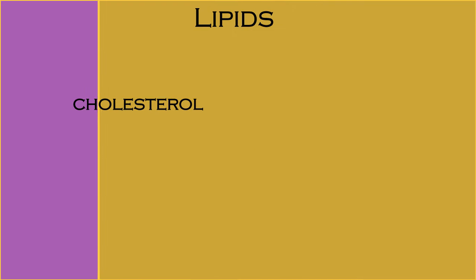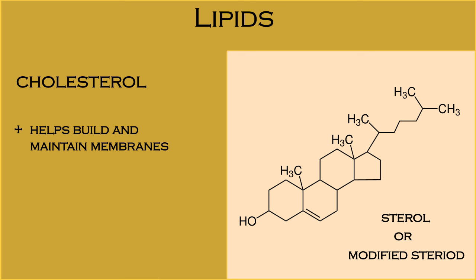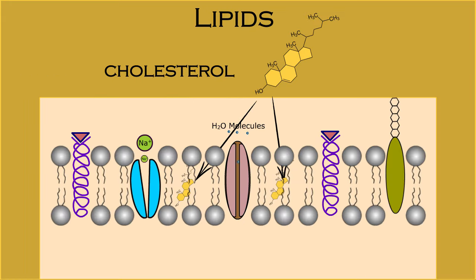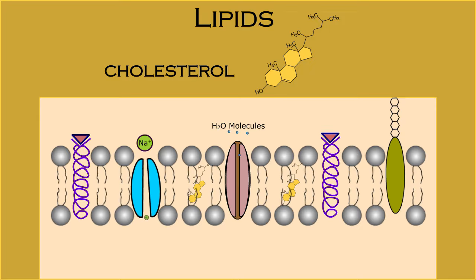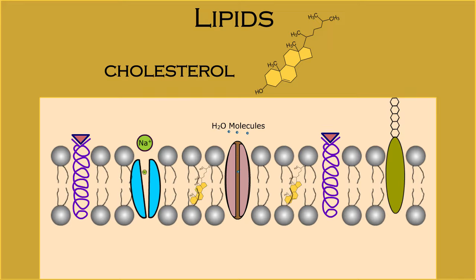Cholesterol is an organic molecule known as a sterol, or modified steroid. It helps build and maintain membranes and composes over 30% of all animal cell membranes. The cholesterol molecule has four interconnected carbon rings. Cholesterol helps to stabilize all animal cell membranes. The body uses it to synthesize steroid hormones, including sex hormones and those of the adrenal cortex. It's also used during vitamin D biosynthesis.